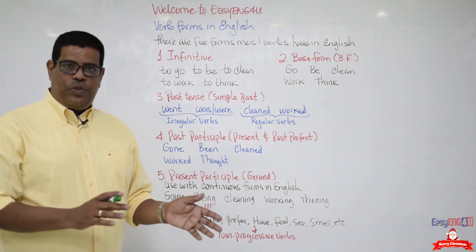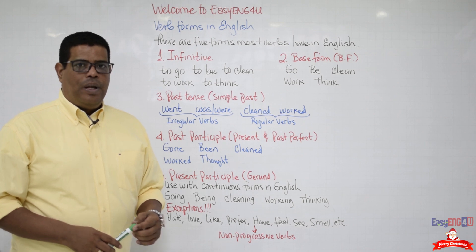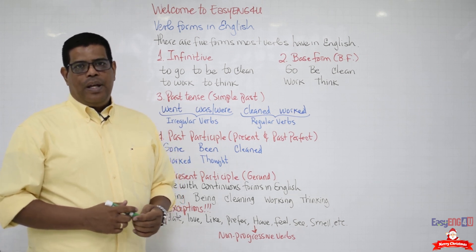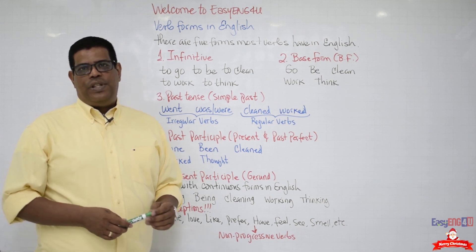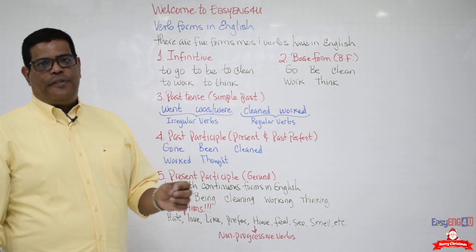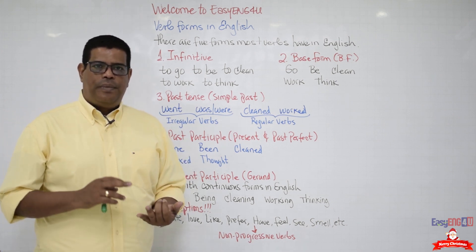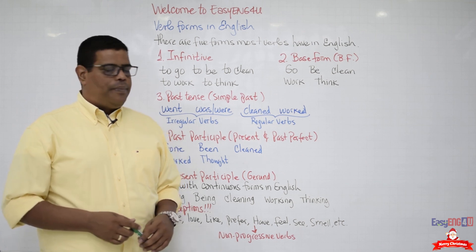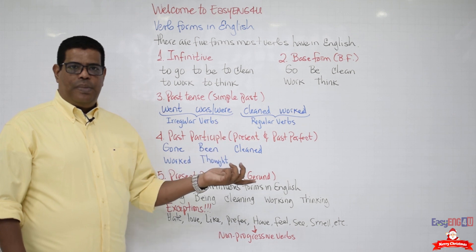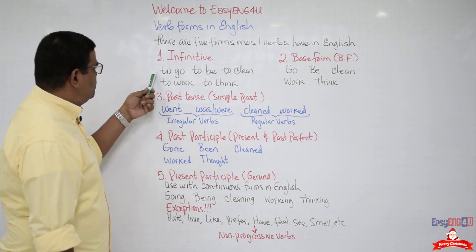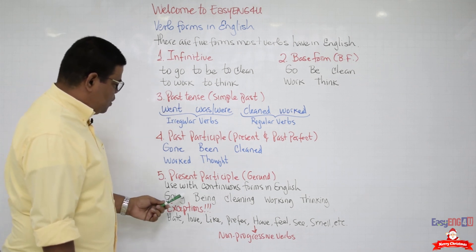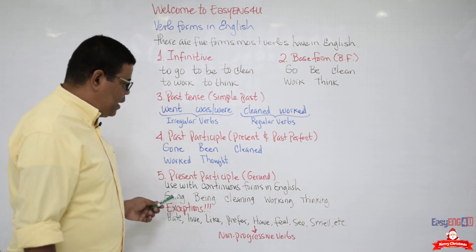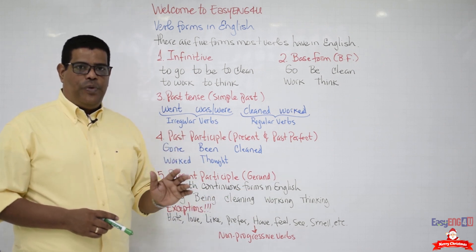The last verb form is called the present participle, but its underworld name is the gerund. We're going to use the gerund in English in what we call the continuous forms — present continuous, past continuous, future continuous, present perfect continuous, past perfect continuous, and the like. When I say 'gerund', immediately the '-ing' comes to mind. The gerund form of 'go' is 'going'; 'be' — 'being'; 'clean' — 'cleaning'; 'work' — 'working'; 'think' — 'thinking'. Remember, we use these with continuous forms in English.